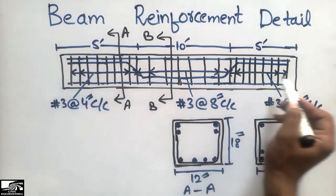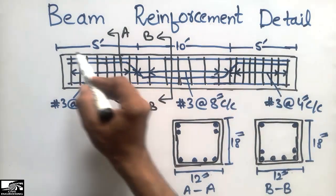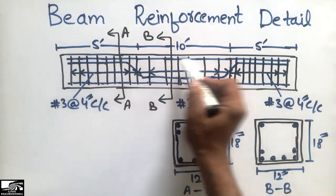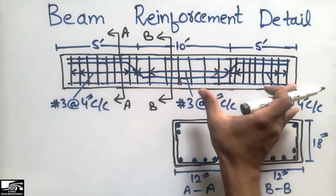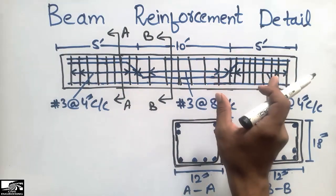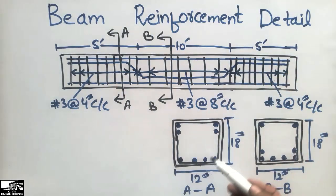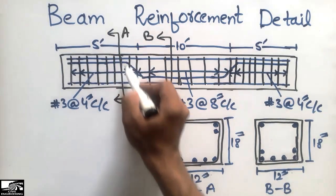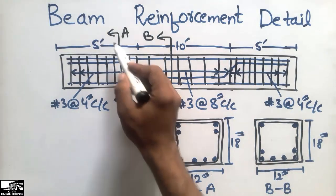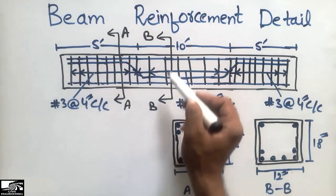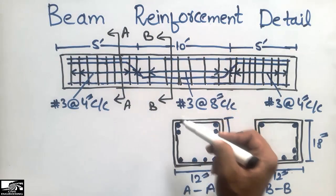This is the beam given to us, which has a length of 5 foot, 10 foot, 5 foot — meaning the total length of the beam is 20 foot. There are two cross-sections given to us: Section AA and Section BB. Section AA is the start section of the beam, while Section BB is the mid section of the beam.